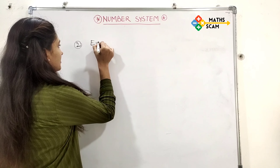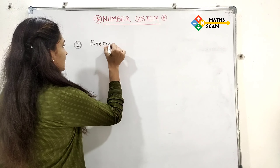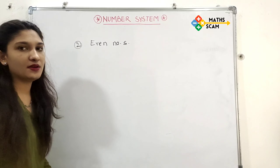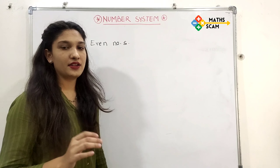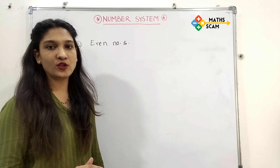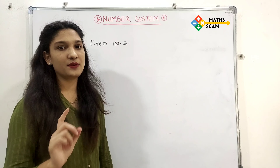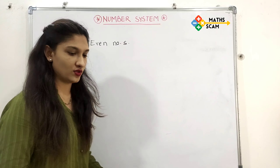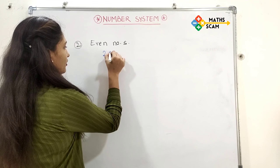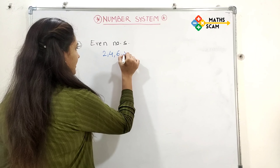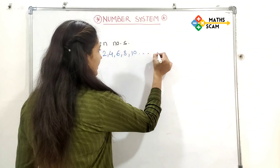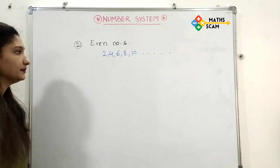Next: even numbers. Even numbers are those which are divisible by 2 with remainder 0. Even numbers start with 2, 4, 6, 8, 10 and so on.